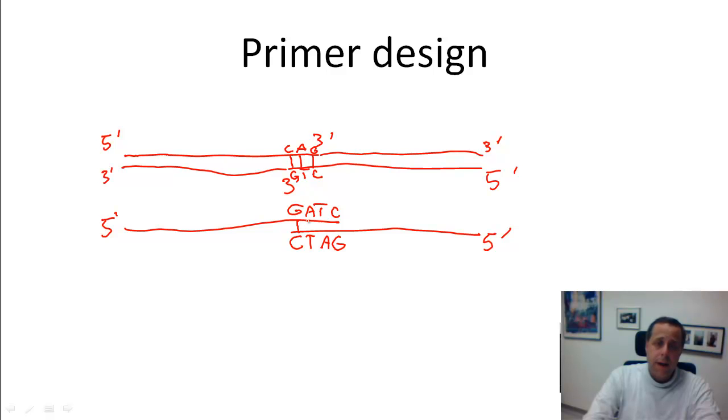Well, of course, they will be annealing to each other as well. That's why you must avoid palindromic sequences at the three prime ends of your primers. Otherwise, primer dimers will form again, not between different primers, but within the same primer.